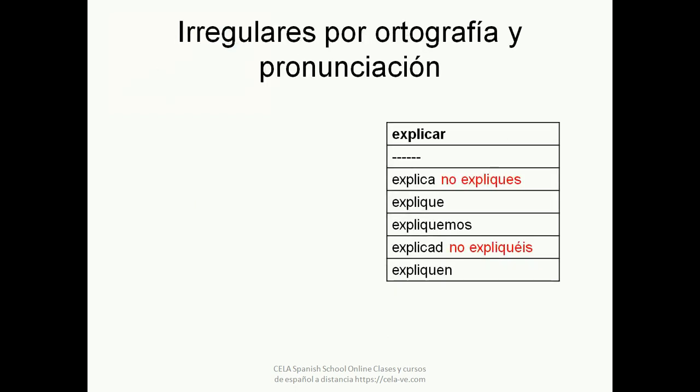Let's see the conjugation of verbs like EXPLICAR (to explain). In the imperative: tú EXPLICA, tú no EXPLIQUES, usted EXPLIQUE, nosotros EXPLIQUEMOS, vosotros EXPLICAD, vosotros no EXPLIQUÉIS, ustedes EXPLIQUEN. As you will remember, the persons tú and vosotros change in the negative imperative. We will deal with this topic in detail in video 4.